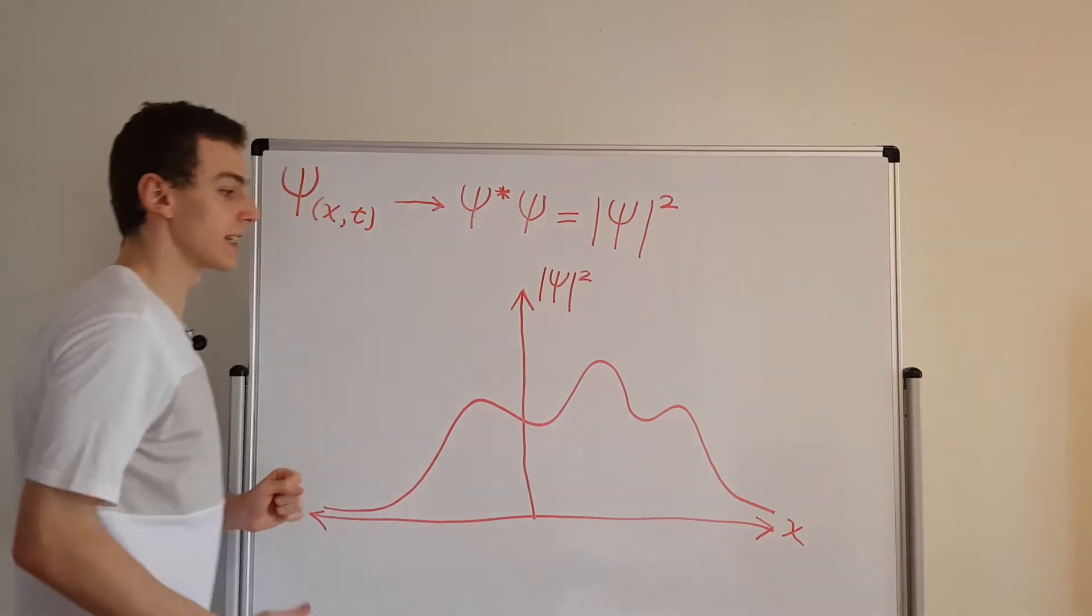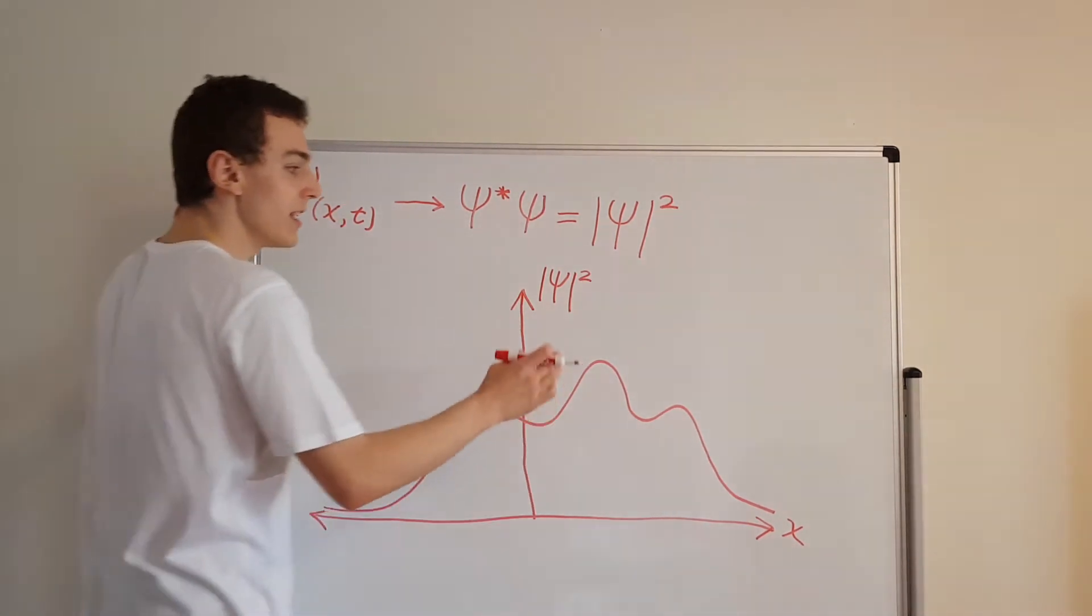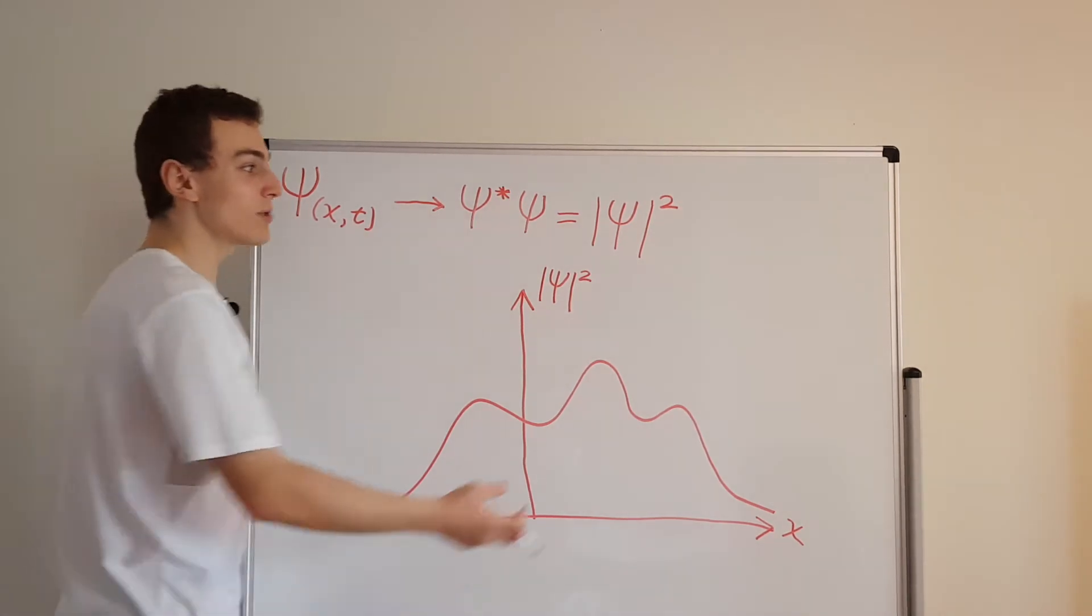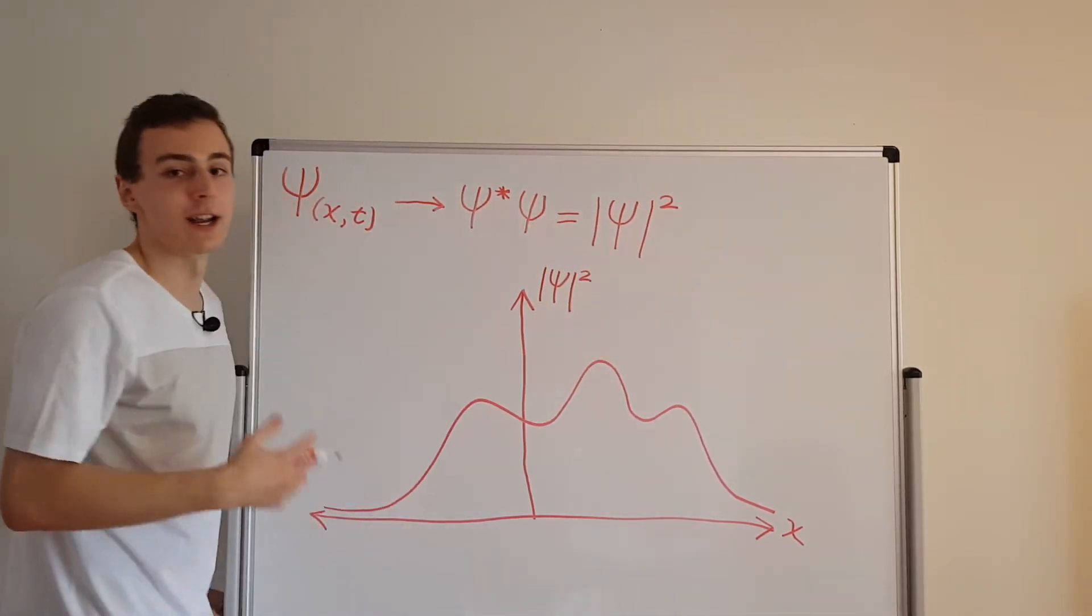But in the middle, it's doing some interesting stuff. So this is essentially the probability density function. That's what this value can be interpreted as.